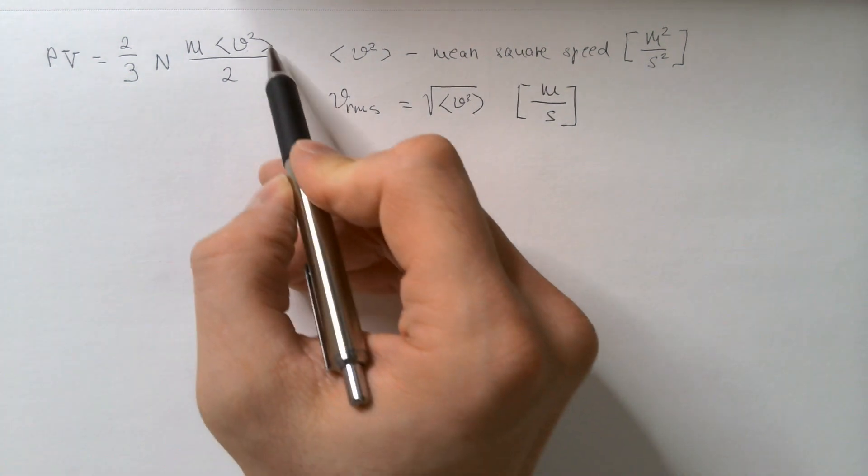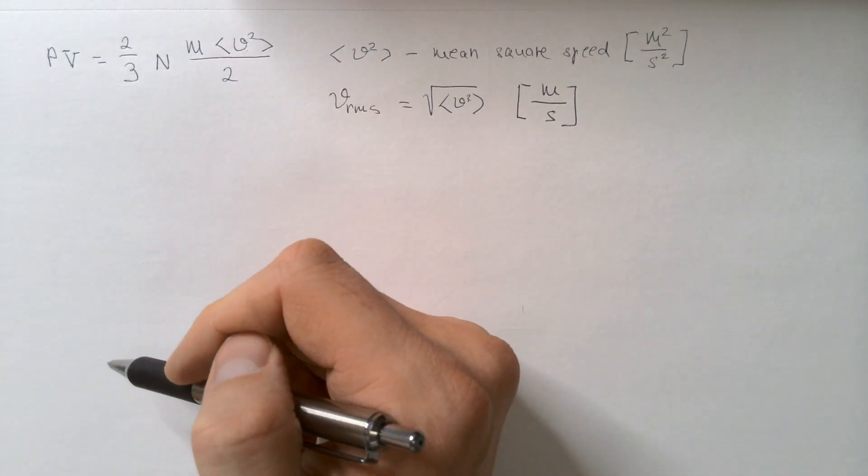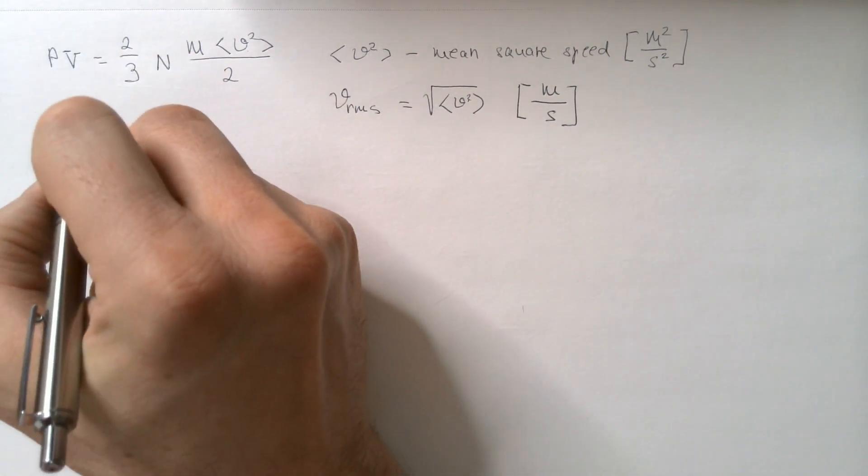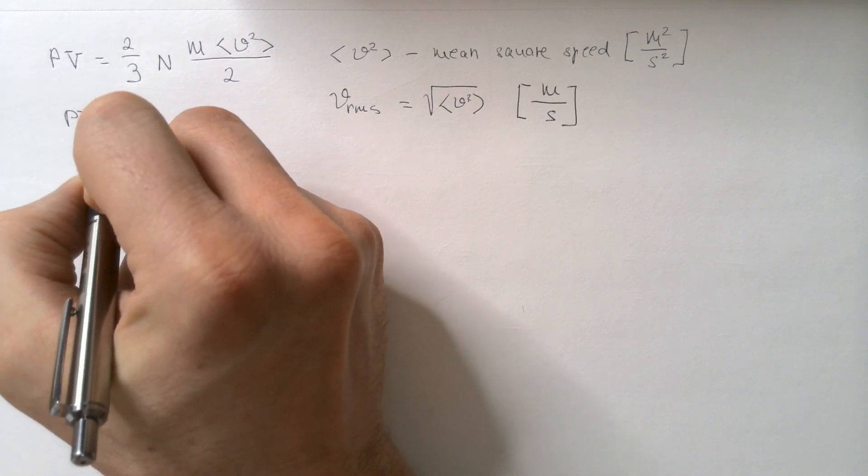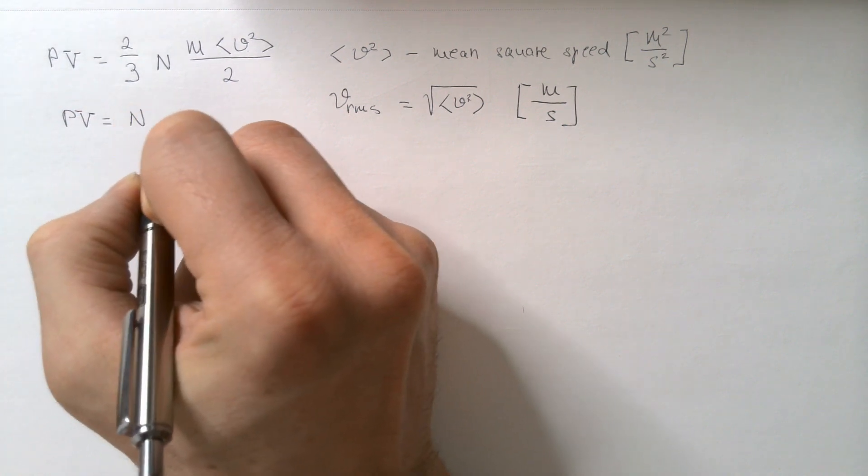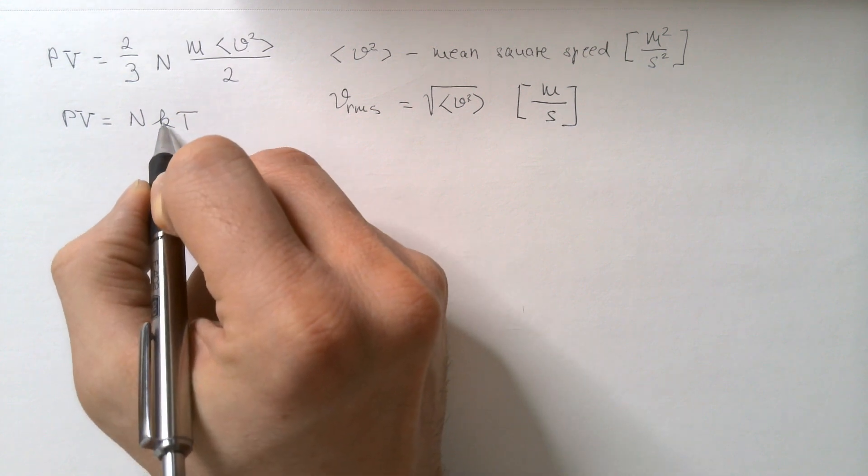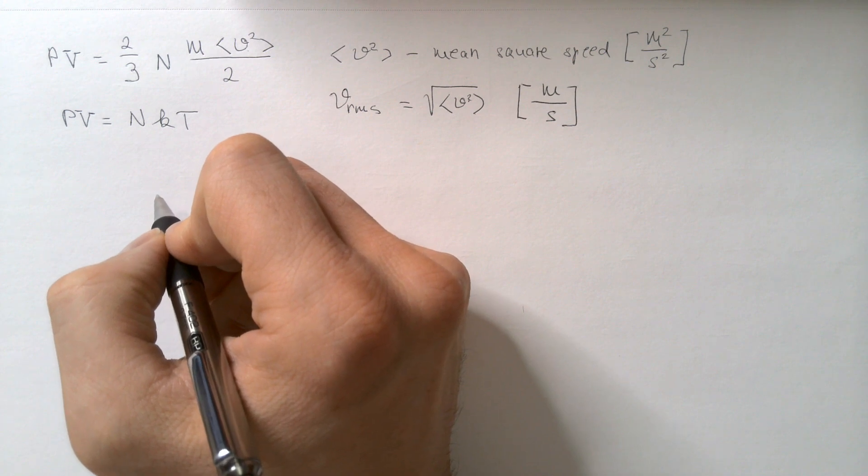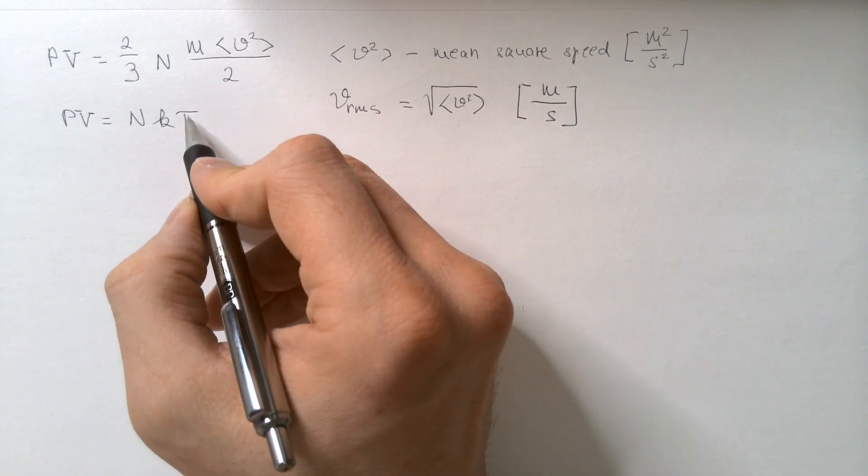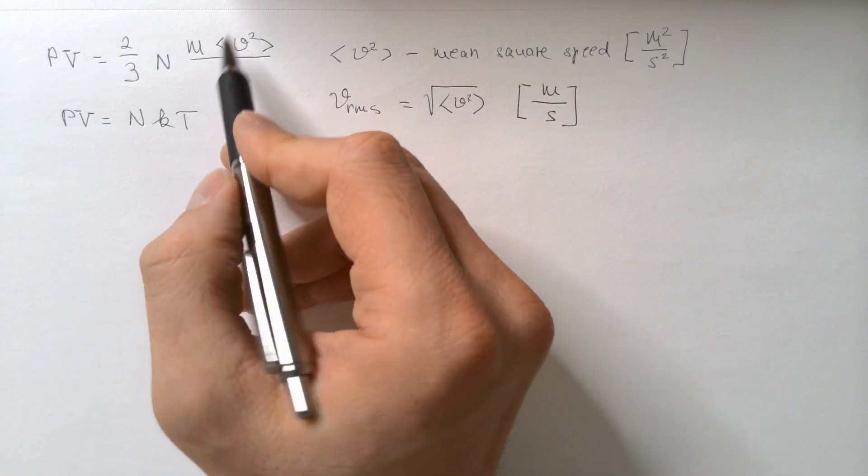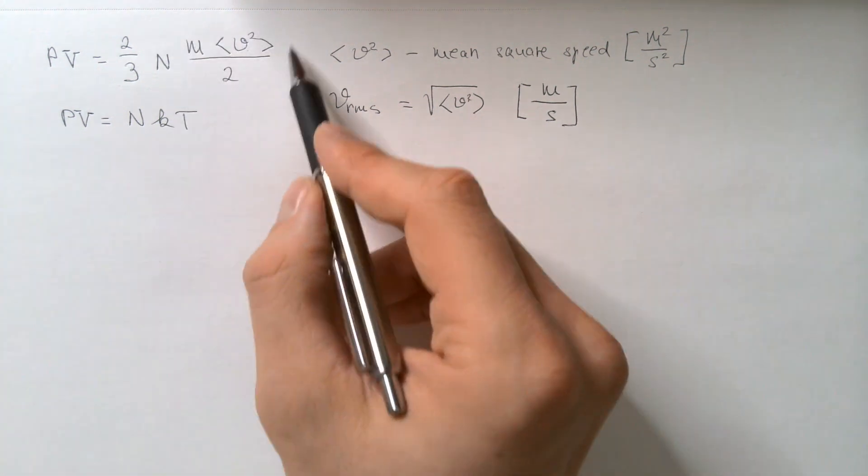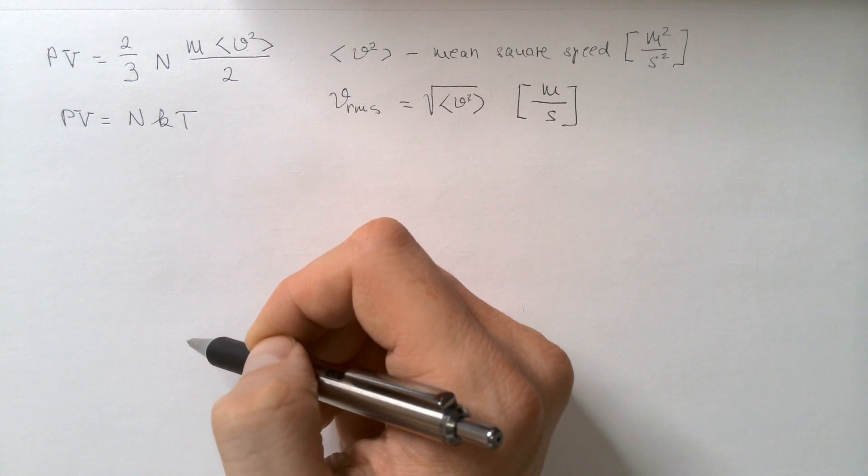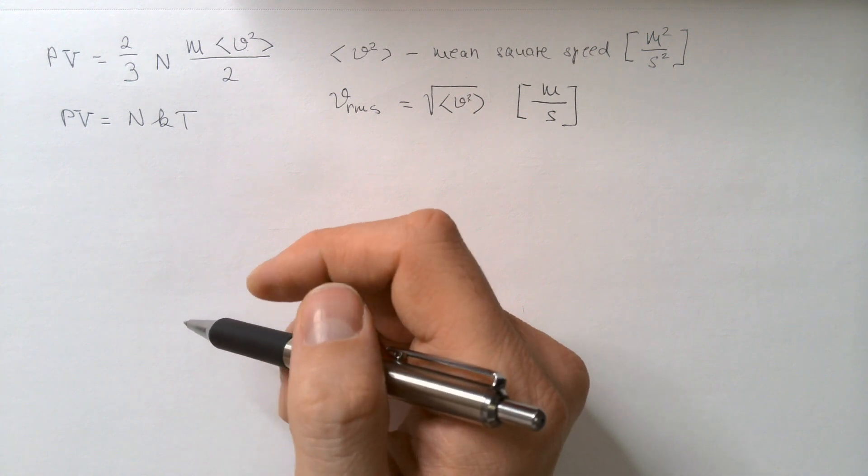Now, to get V RMS from this equation, we will combine it with equation of state for an ideal gas that says that PV is equal to N K T, where K is Boltzmann constant, 1.38 times 10 to power negative 23 joules per Kelvin, and T is absolute temperature, and you will remember that this term over here, average kinetic energy, is proportional to absolute temperature. That comes from my video on the temperature of a gas.